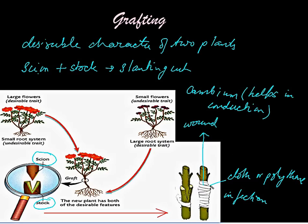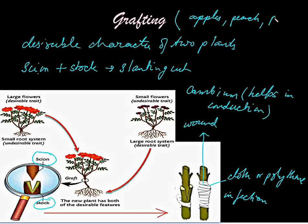Soon, the wounded portion gets healed. The scion continues to produce leaves, flowers, fruit, etc., and the stock absorbs water from the soil. Grafting is mainly done in apples, peach, pear, and apricot.